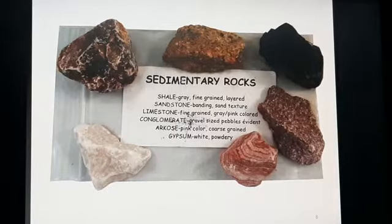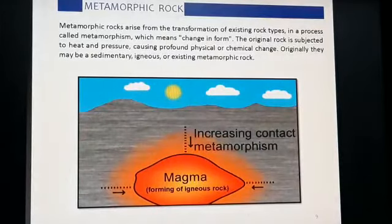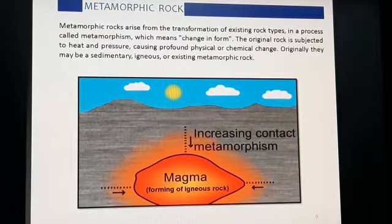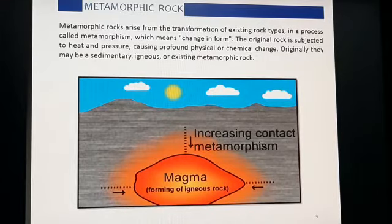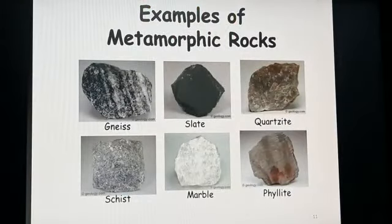The third type of rocks are known as metamorphic rocks. As the name suggests, these are formed when existing rocks undergo metamorphism — a complete changeover both physical and chemical — generally due to extreme pressure and temperature acting on pre-existing rocks. Some common examples are slate, marble, schist, quartzite, and many more.